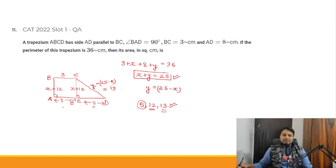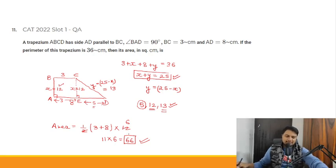So X equals 12, BC is 3, and AD is 8. To find the area of this trapezium, the formula is half times sum of parallel sides times distance between them. The parallel sides are 3 and 8. The height is 12. So the area is 1/2 × (3 + 8) × 12 = 1/2 × 11 × 12 = 11 × 6 = 66. So 66 is the answer to this question. Thank you.